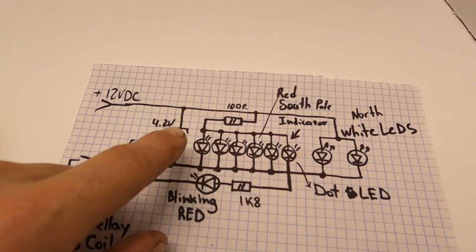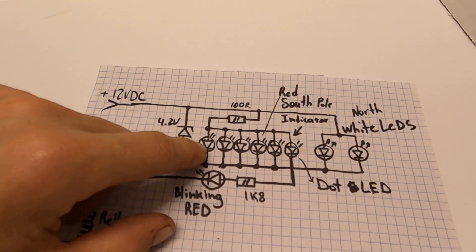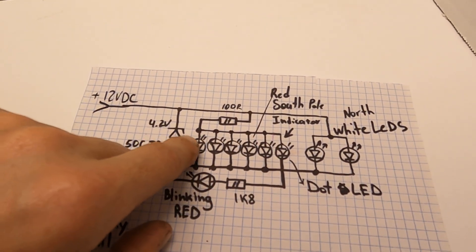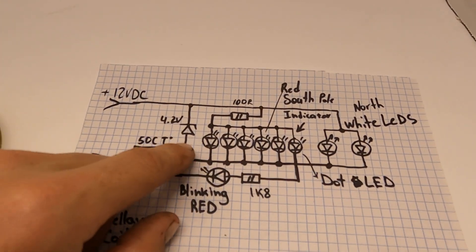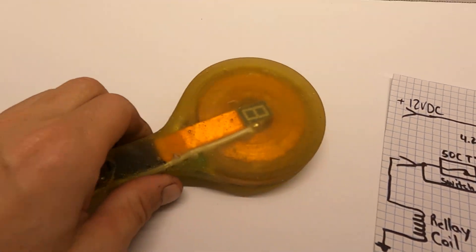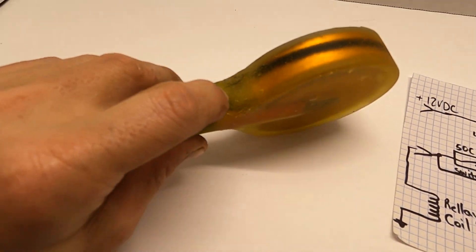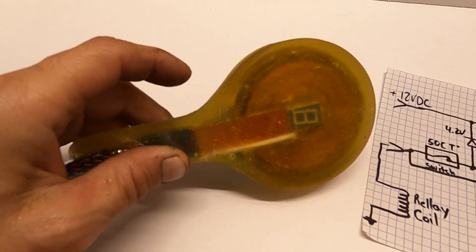This dot is connected to the blinking LED. Anytime the thermal switch triggers, this blinking LED will start blinking and the south pole will shut off, and so is backlight for the north pole will shut off, and this will start blinking anytime the thermal switch triggers.